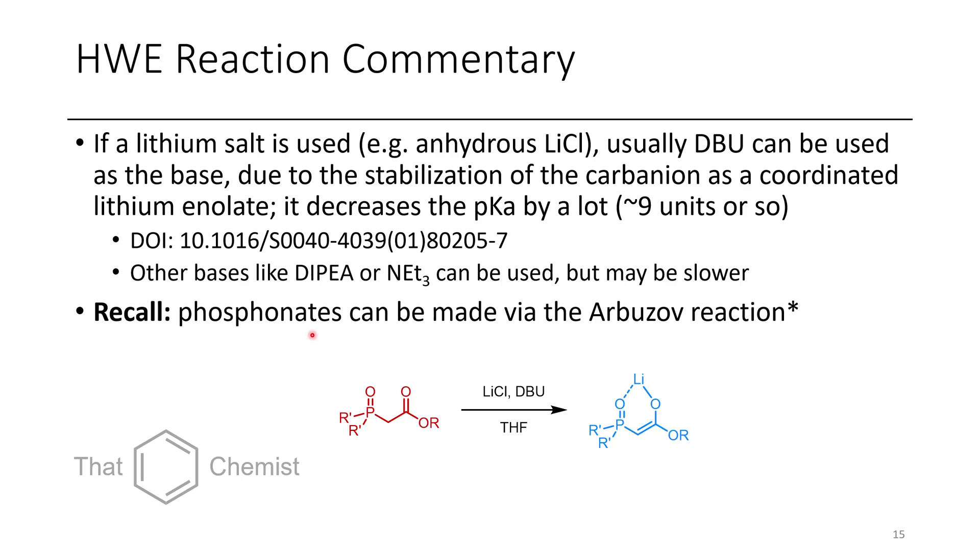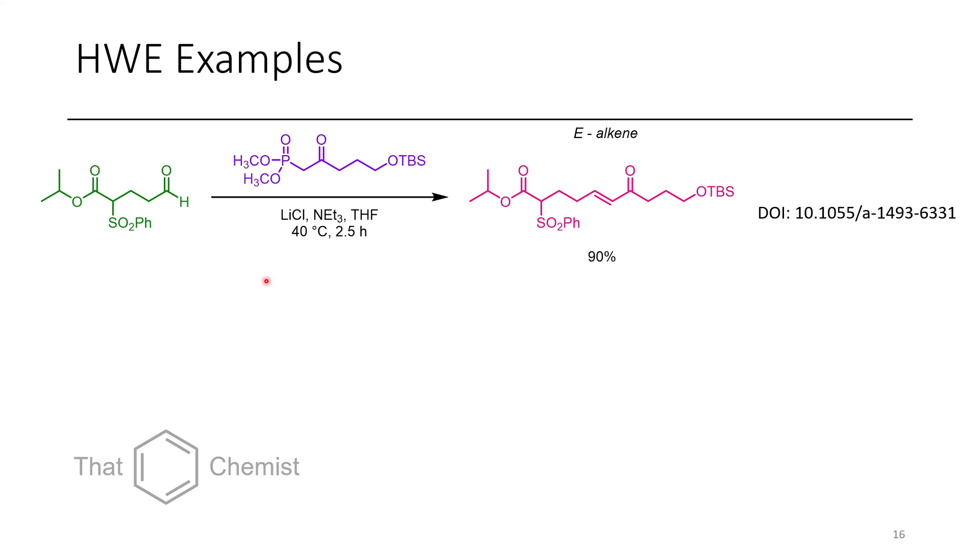So if you would like, you can look at the previous video where we talk about phosphorus and oxygen nucleophiles, and you can form phosphonates using what's known as the Arbuzov reaction, and I'll put a card right here for that. Now, some examples of the HWE include the conversion of this sulfone-containing ester to this alpha-beta-unsaturated ketone product. So you can see here, the electron withdrawing group is just a ketone, and we get an E-alkene as the sole product.